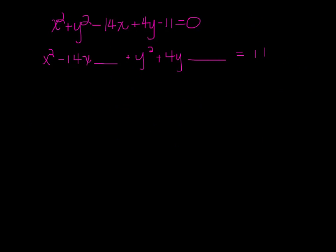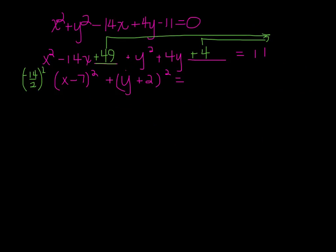To find out what term actually goes in here, I'm going to take negative 14, divide it by 2, and square it. So I'm going to get positive 49 here. 4 divided by 2 and square it is 4. I'm now going to factor this into x minus 7 quantity squared plus y plus 2 quantity squared equals, and don't forget, these, if you add to one side, have to get added to the other side. So 11 plus 4 plus 49.